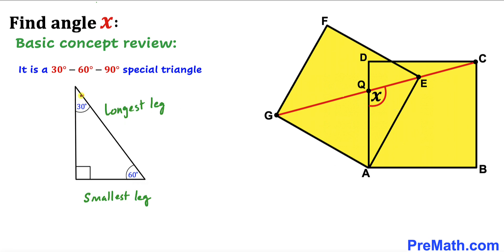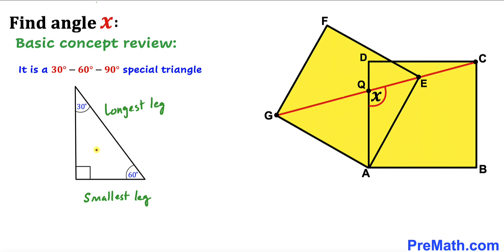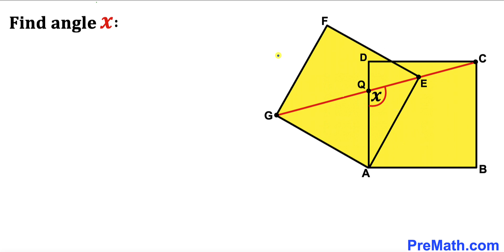Here's our special 30-60-90 triangle. The 30 degree angle is the smallest, so the leg opposite to it is the smallest leg, whereas the 90 degree angle is the largest, so the side opposite to it is the longest leg. In a 30-60-90 triangle, the longest leg is always twice the smallest leg. If the smallest leg is a units, the longest leg is 2a and the third leg is a times the square root of 3.